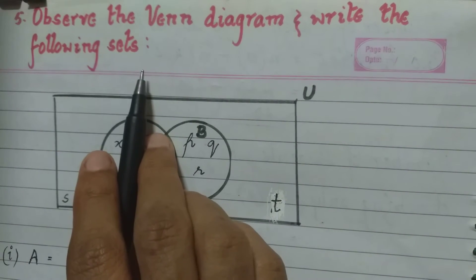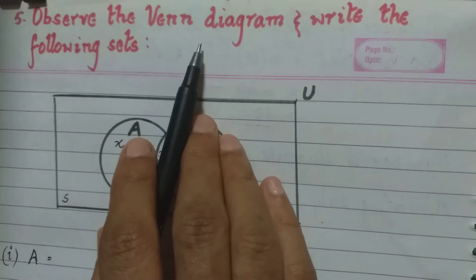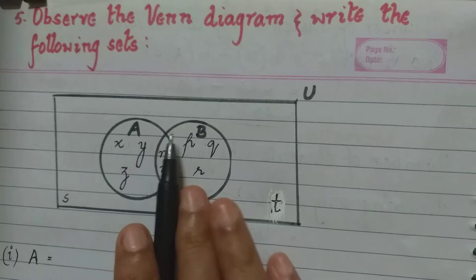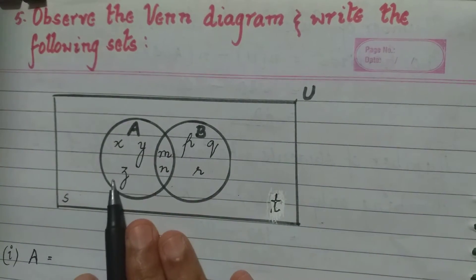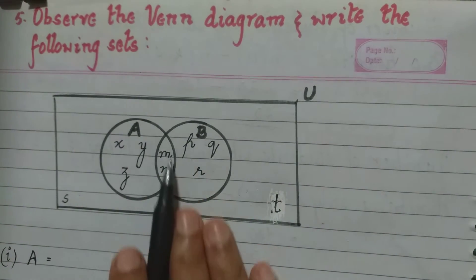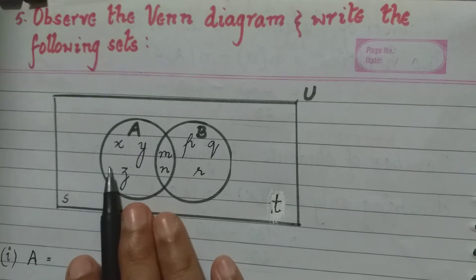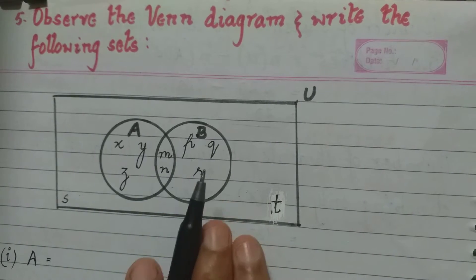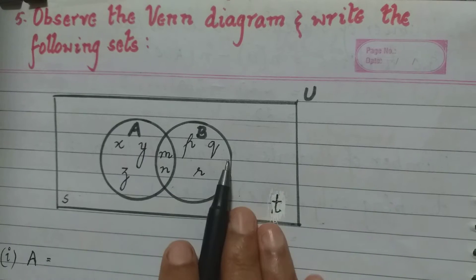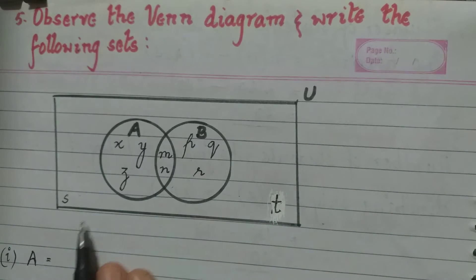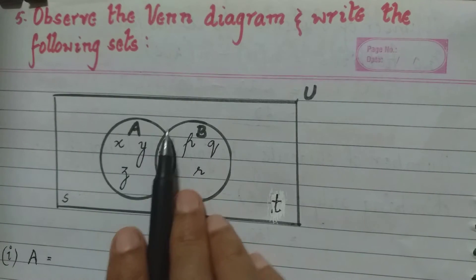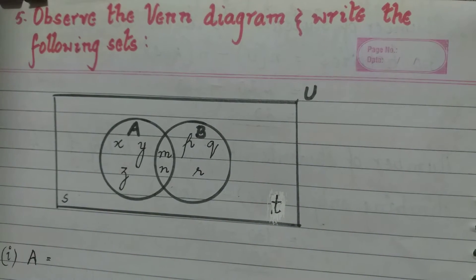Let us see the fifth and last question of this exercise. Observe the Venn diagram and write the following sets. Here we have set A consisting of certain elements, set B consisting of certain elements, and there are elements common to both set A and set B. There are also elements present in the universal set which are not present in set A and set B. We have to write the elements which constitute each of these sets.